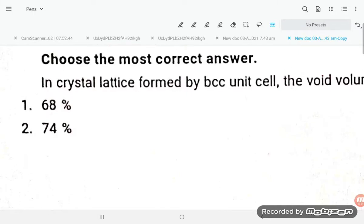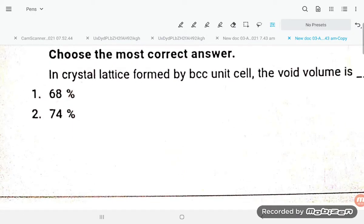Hello students, let's see one more problem. They are saying in crystal lattice formed by bcc unit cell, the void volume is? So if you talk about bcc, that is bcc is 68 percent.